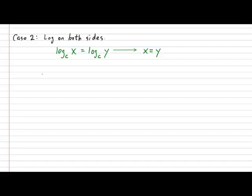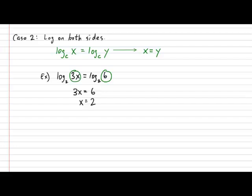Our first example will be a very easy one. Suppose I ask you to solve x in the following equation: log base 2 of 3x is equal to log base 2 of 6. Since the bases are the same on both sides of the equal sign, all you really need to concern yourself with is making sure that the objects you are logging are identical. So, 3x is equal to 6. In effect, we drop the logs, and that gives us an x value of 2. Logically, the answer makes perfect sense because plugging 2 back in gives log base 2 of 6 on the left, which is identical to the right side.